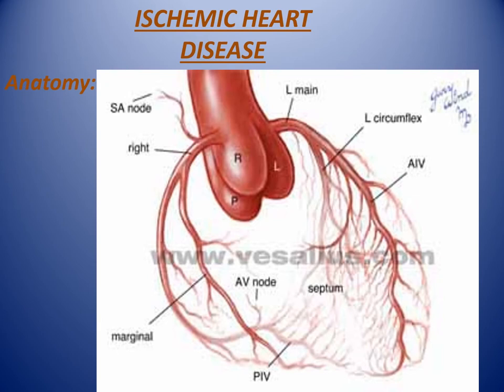Coronary anatomy — to understand ischemic heart disease we need to understand coronary anatomy. The left main coronary artery divides into the left anterior descending with diagonal branches, and the left circumflex which divides into two obtuse marginals. The right coronary artery divides into posterolateral and posterior descending arteries.